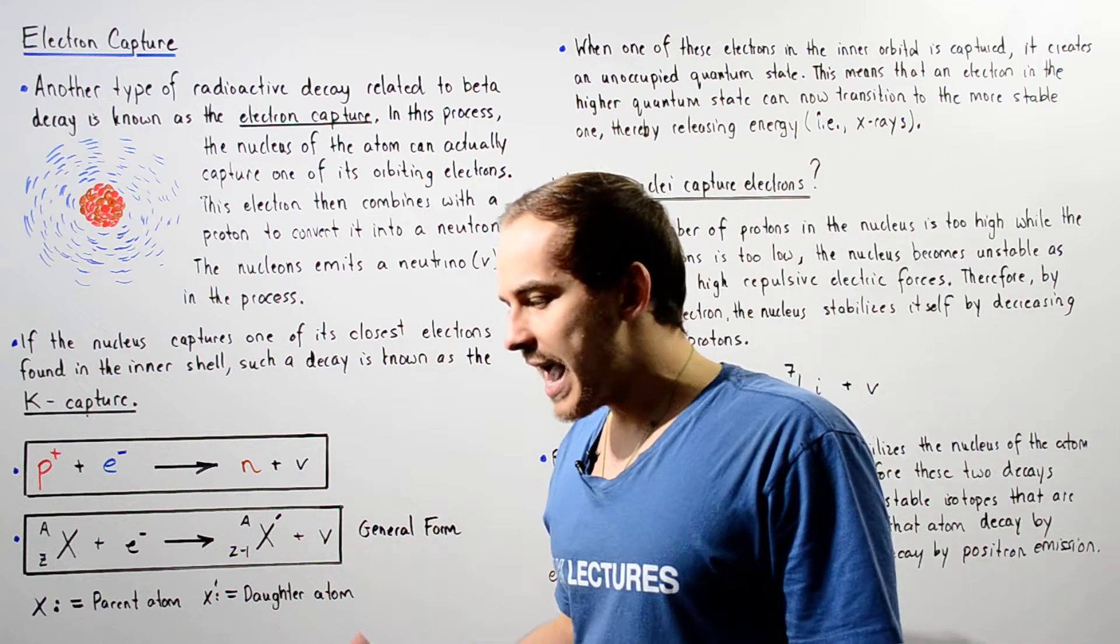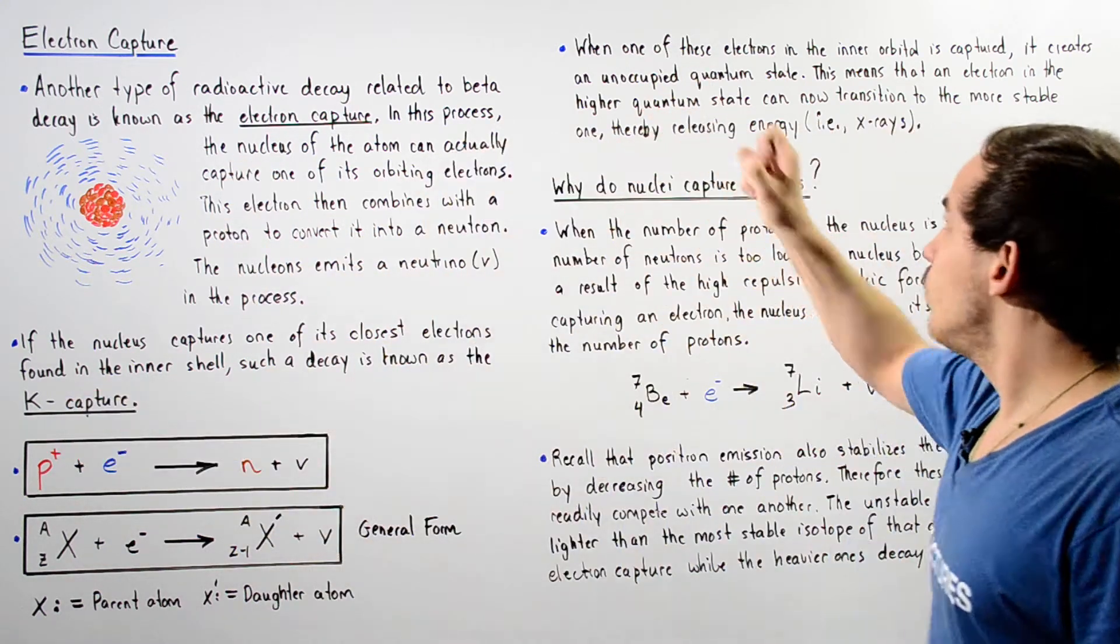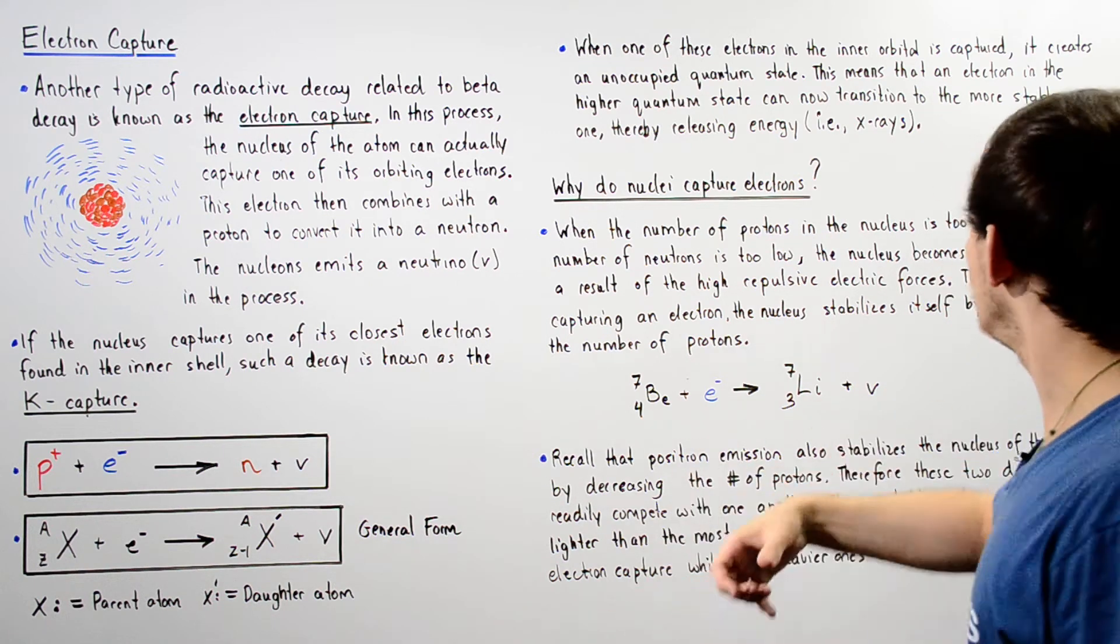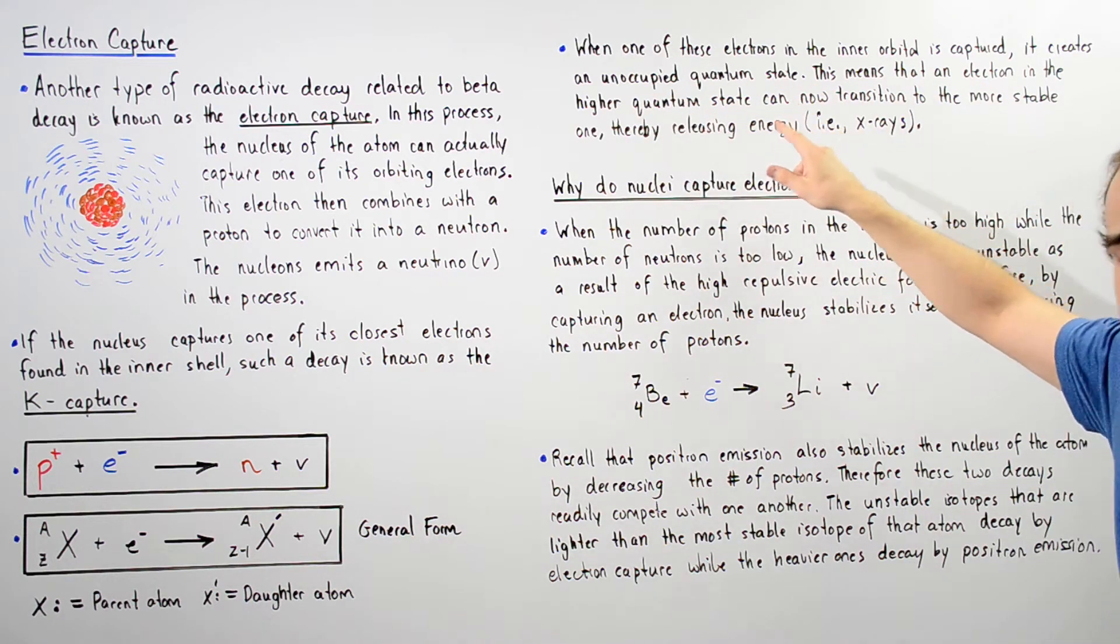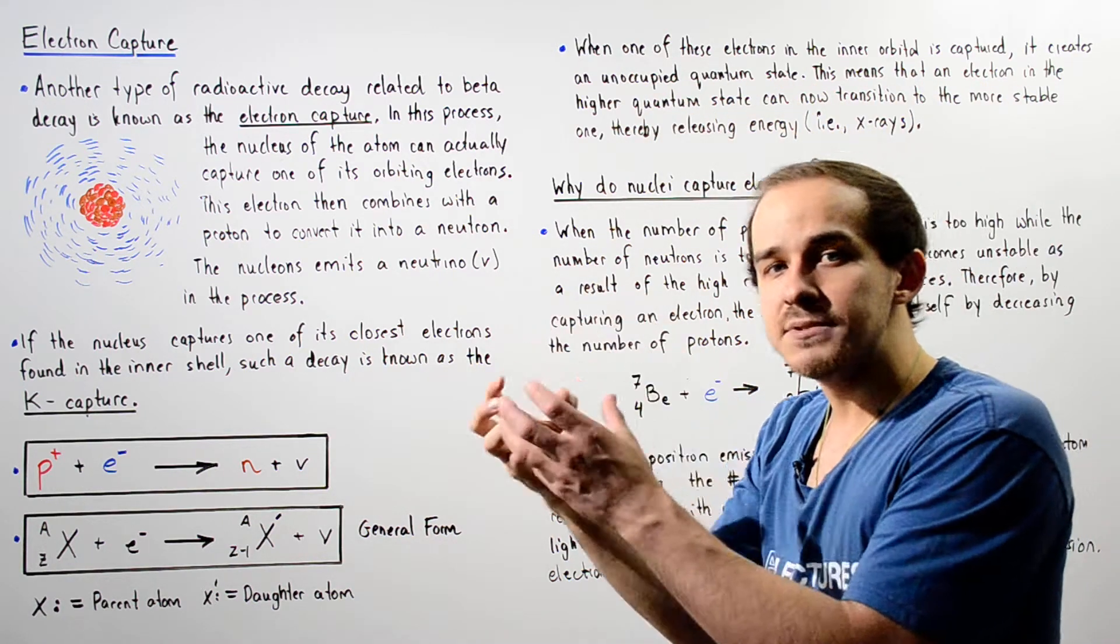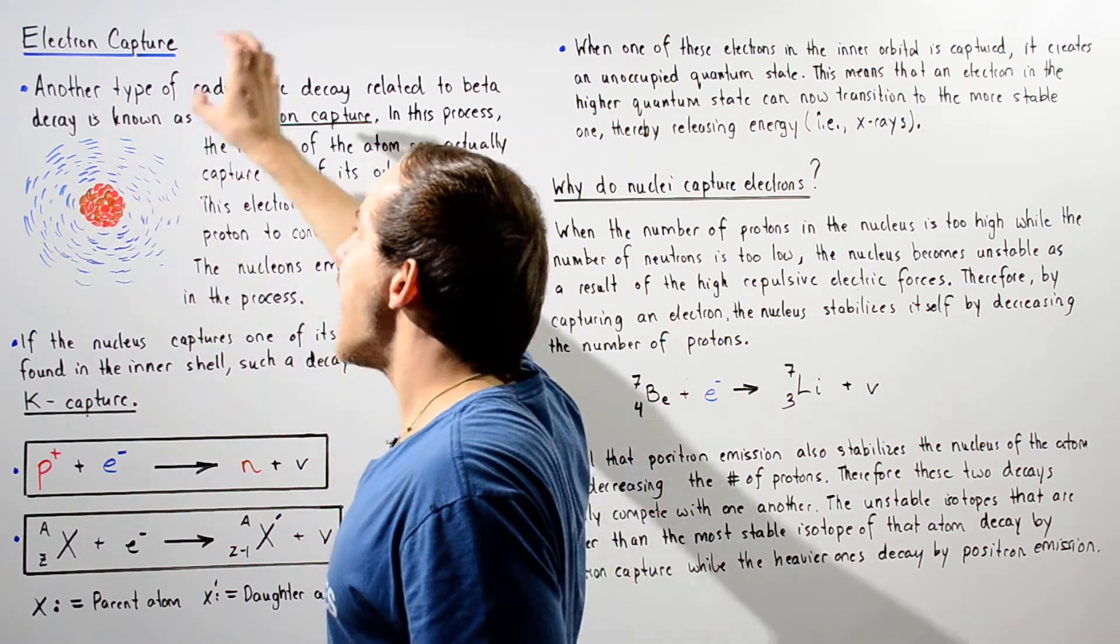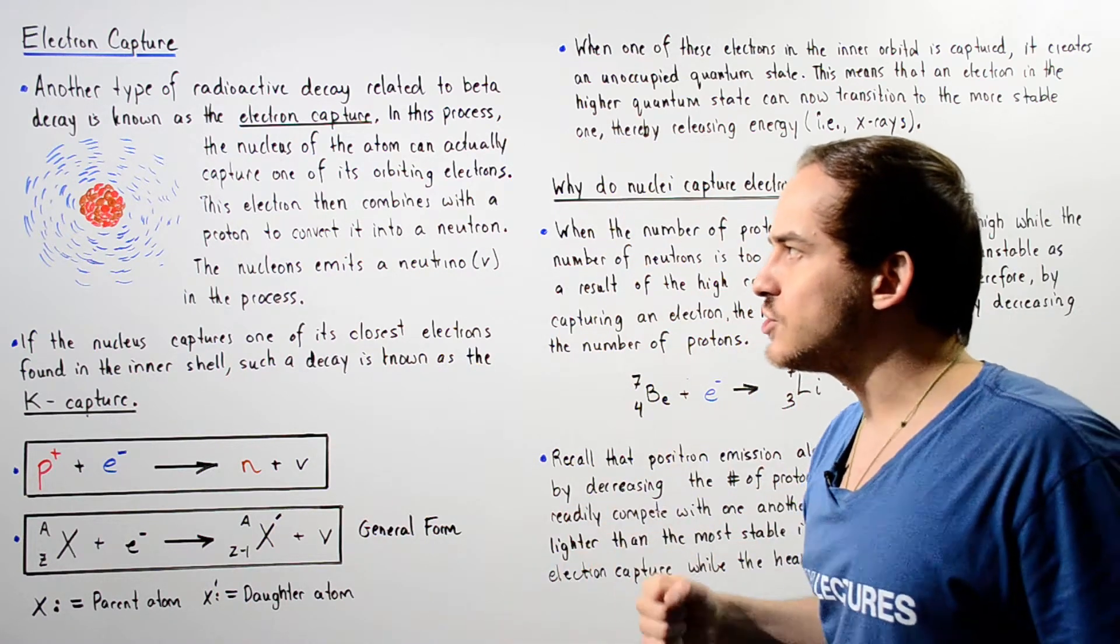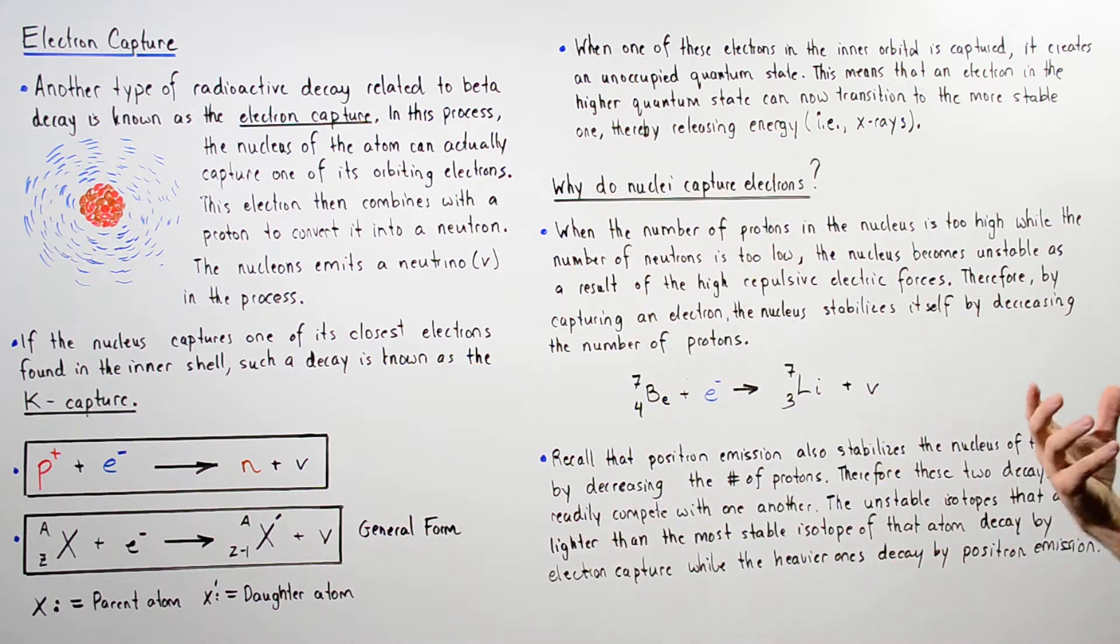Now what actually happens when that electron is captured? Well, when one of these electrons in the inner orbital is captured by the nucleus, it creates an unoccupied quantum state. So it leaves an empty space in which another electron that is higher in energy can now basically transition into that lower in energy and more stable quantum state.